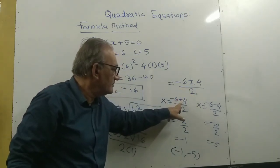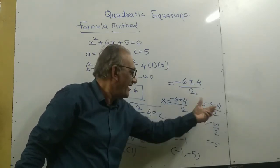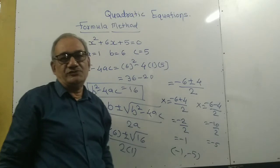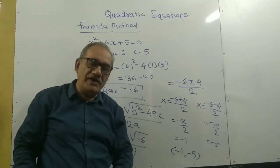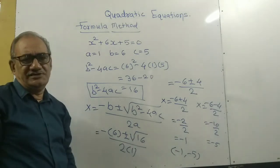The answer is: one value is -1 and the other value is -5.